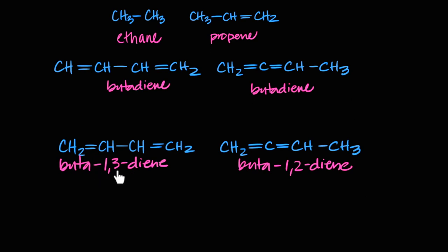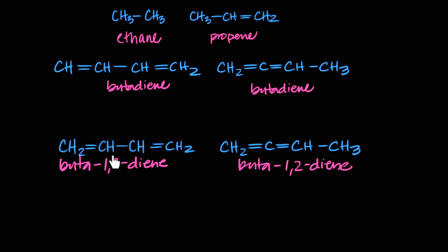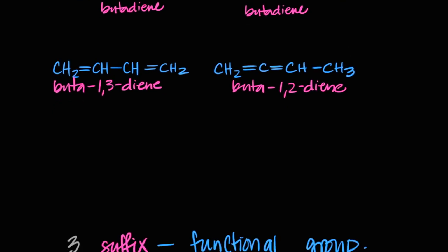One thing to note about formatting: between two numbers there will always be a comma, and between a letter and a number there will be a dash. The position numbering comes before the bond type in the name, so the position of the double bond appears before the 'diene' part — hence buta-1,3-diene. Now let's talk about how we name functional groups, which is the suffix part of the name.